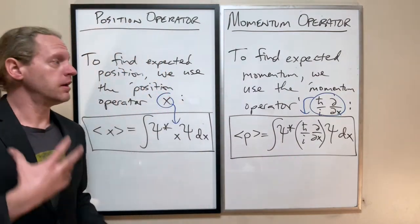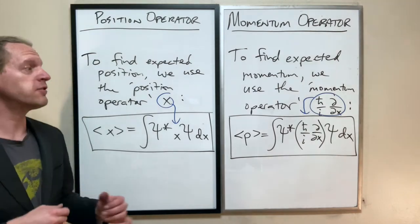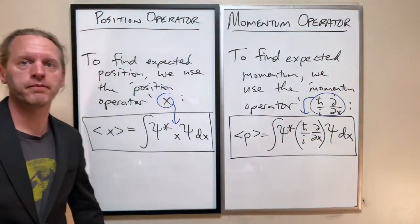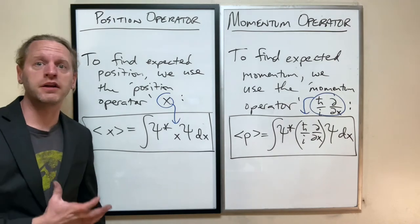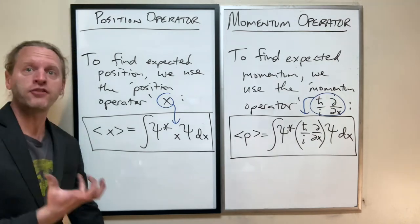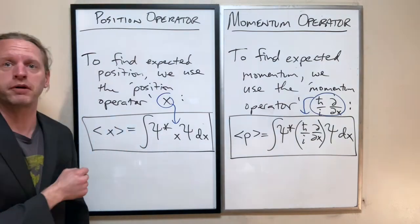For example, if you want to calculate the kinetic energy, that's based on the momentum operator. If you want to calculate the potential energy of something, that will be based on the position operator.